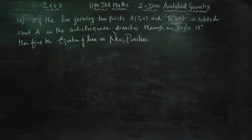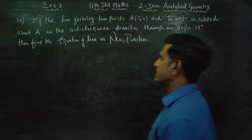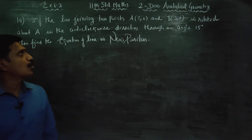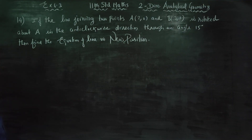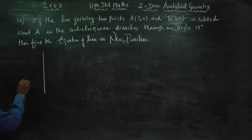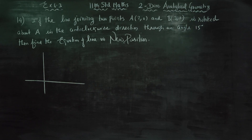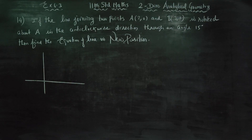Dear Learn Standard students, I am Vetro Karnagaran. In exercise no. 6.3, sum no. 14, if the line joining two points is rotated about A in an anticlockwise direction through an angle of 15 degrees, then find the equation of the line in the new position.